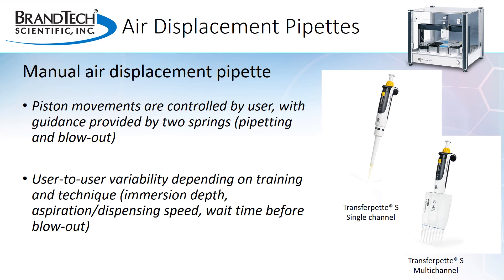Variability in the volumes dispensed with an air displacement pipette depends on several factors, including pre-wetting tips, the depth and angle that the tip is immersed in the liquid, the aspiration and dispensing speed, as well as the wait time before blowout.